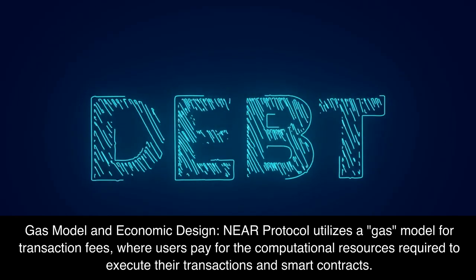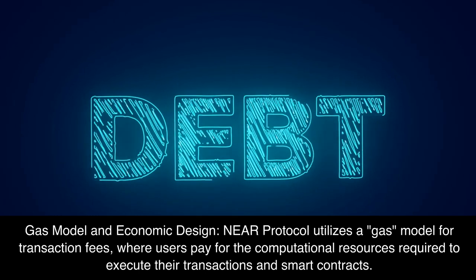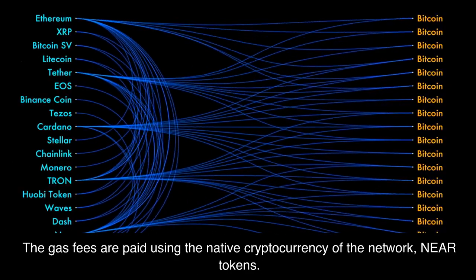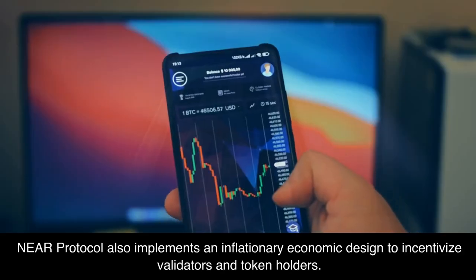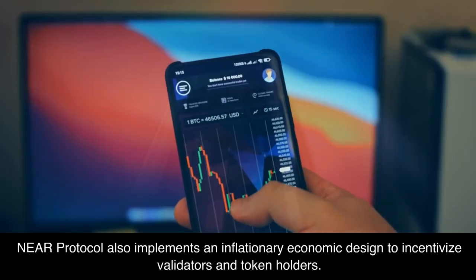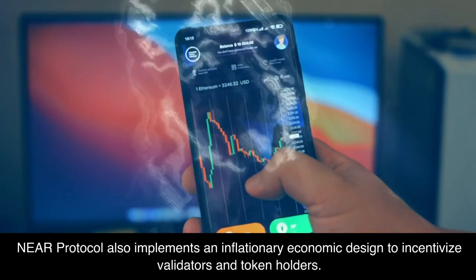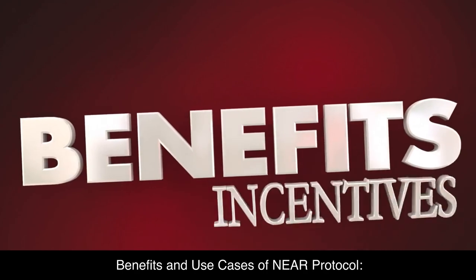Near Protocol utilizes a gas model for transaction fees, where users pay for the computational resources required to execute their transactions and smart contracts. The gas fees are paid using the native cryptocurrency of the network, Near Tokens. Near Protocol also implements an inflationary economic design to incentivize validators and token holders.